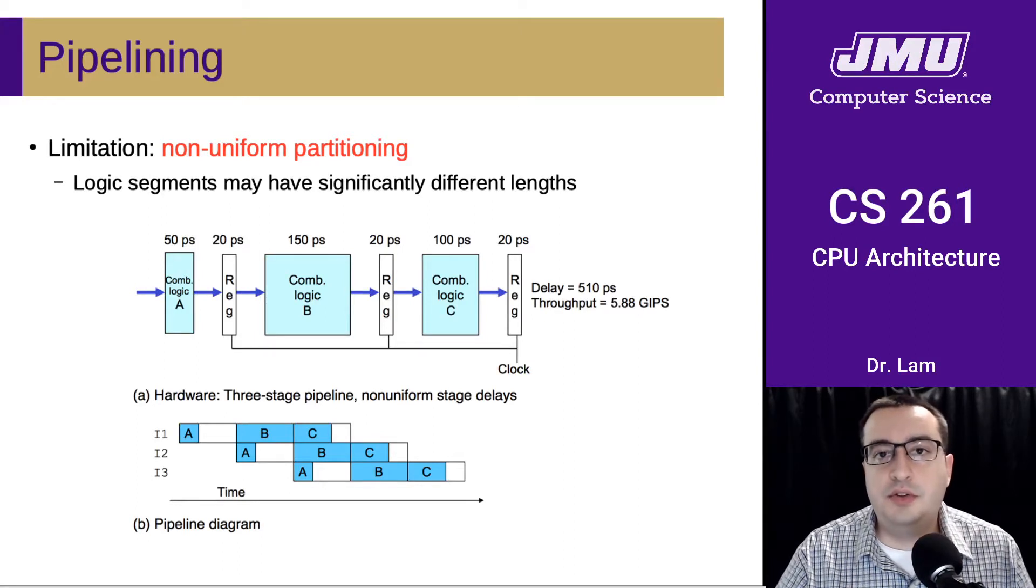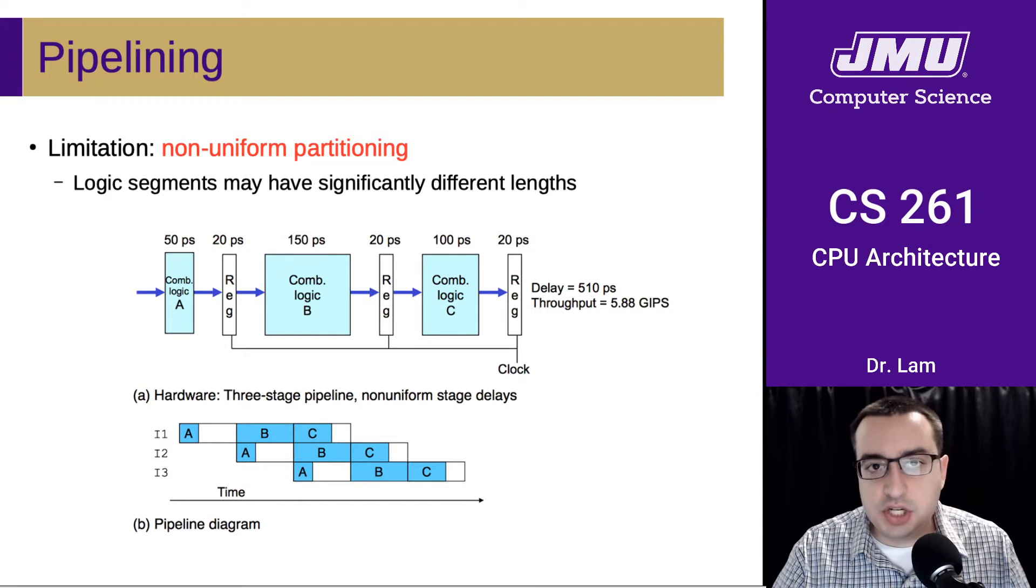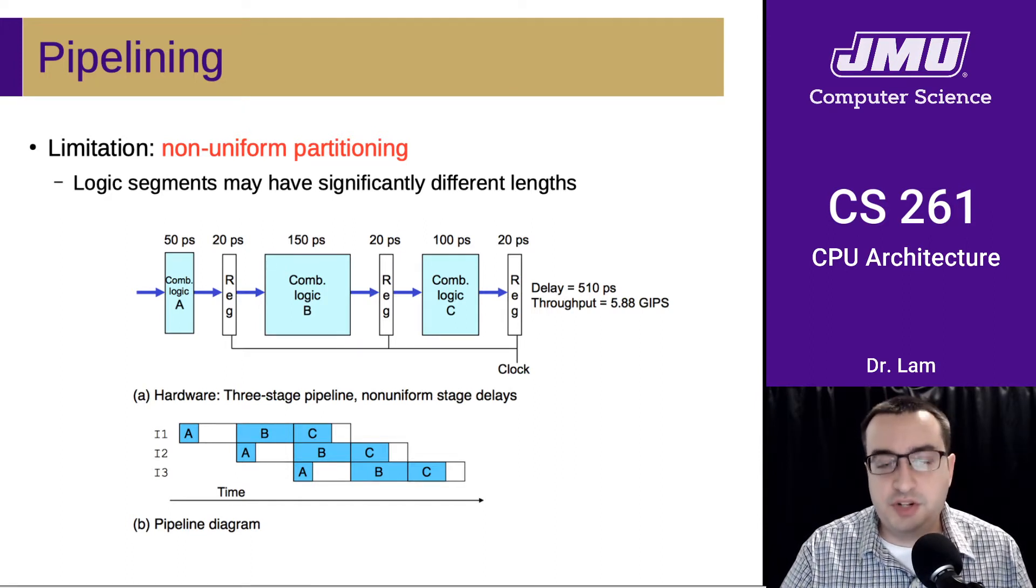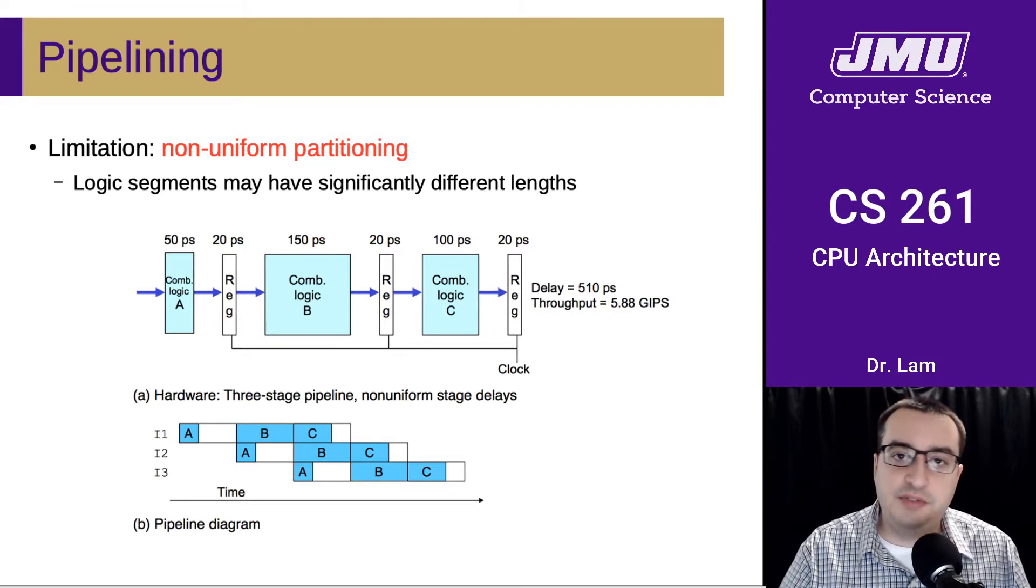Now let's talk about some issues with pipelining. One limitation on pipelining is something called non-uniform partitioning, and this is when the logic segments in the CPU have significantly different lengths.